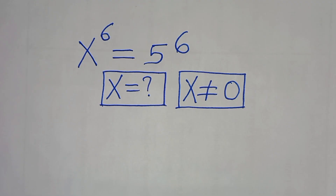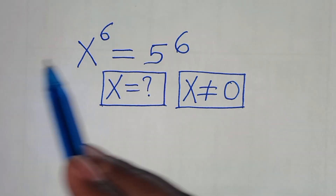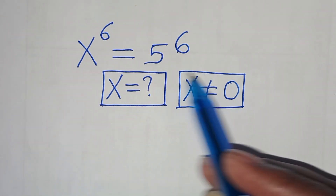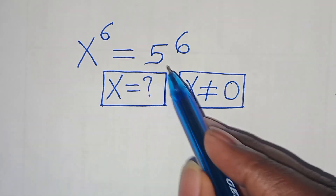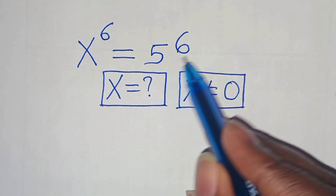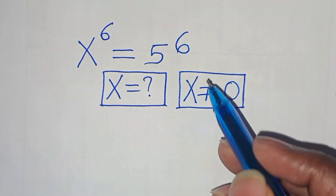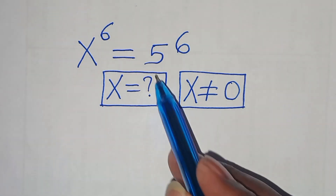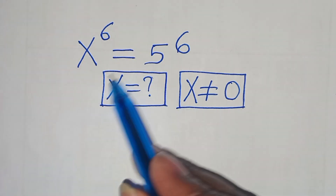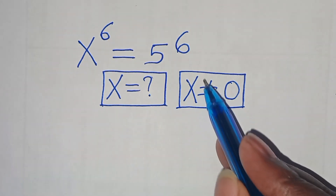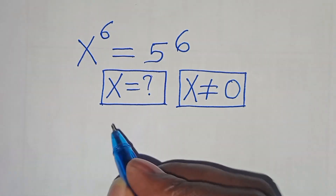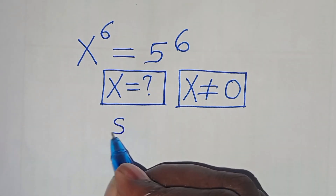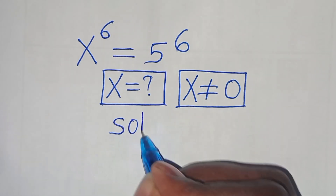Hello everyone, you are welcome to solve this nice exponential equation, which is x to the power of 6, equal to 5 to the power of 6. What are the values of x, given that x is not equal to 0? Let's provide a solution from here.